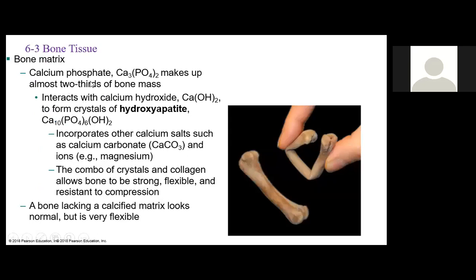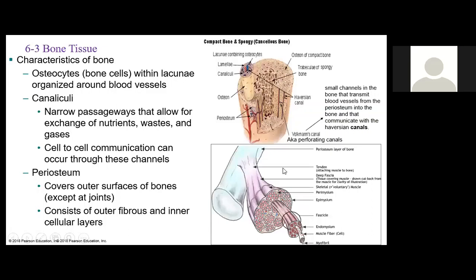The matrix consists of calcium phosphate, which makes up almost two-thirds of bone mass. This interacts with calcium hydroxide to form crystals called hydroxyapatite, which incorporate other calcium salts and ions. When those crystals combine with the collagen fibers, the bone becomes very strong but also flexible and resistant to compression. A bone lacking a calcified matrix looks normal but is very flexible—not what we want for supporting body weight.